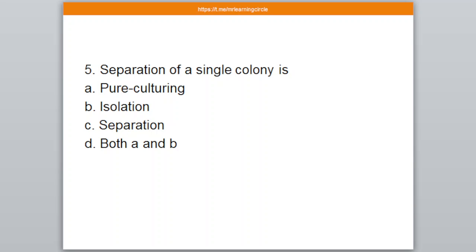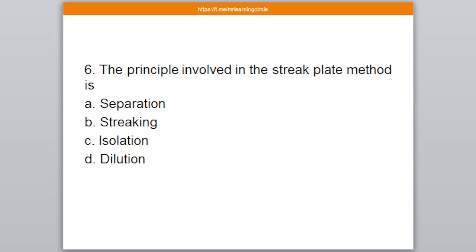Question number 5. Separation of a single colony is — A: Pure culturing, B: Isolation, C: Separation, D: Both A and B. The correct answer is option number B — Isolation.